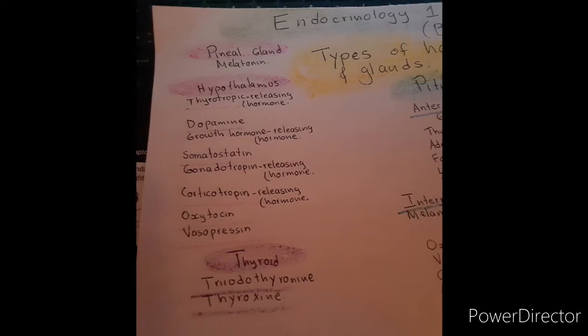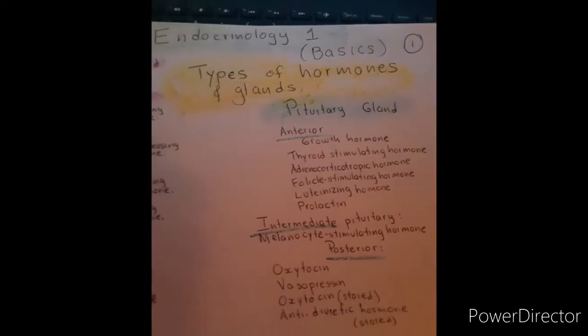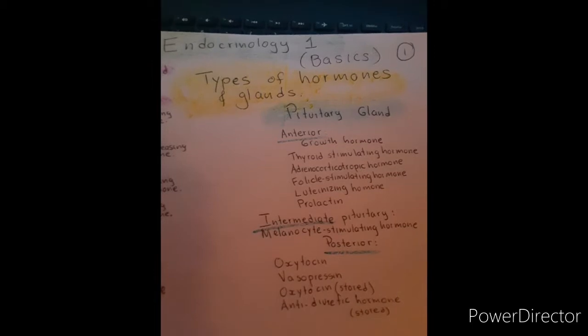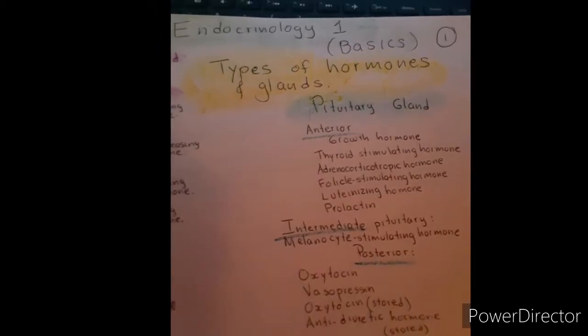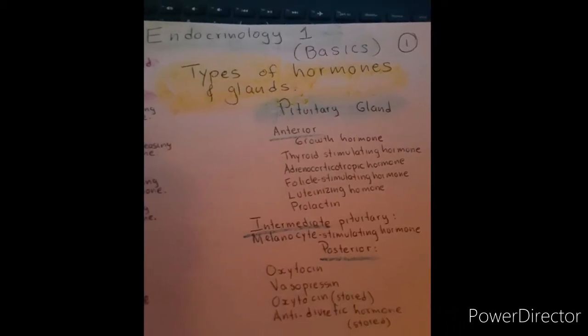On the pineal gland, it produces melatonin. On the hypothalamus, the thyrotropic releasing hormone, dopamine, growth hormone releasing hormone, somatostatin.